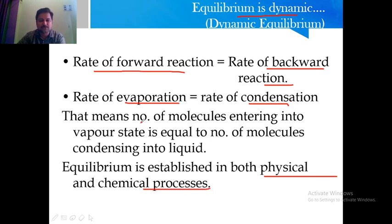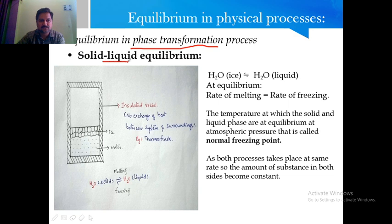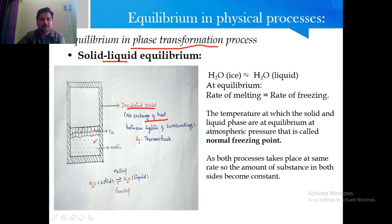First, we discuss equilibrium in physical processes, starting with phase transformations — conversions between solid, liquid, and vapor states. In solid-liquid equilibrium, an insulated vessel (with no heat exchange between system and surroundings) contains small amounts of ice and water. When maintained at a constant temperature, the amounts of ice and water do not change. At 273 K, ice is in equilibrium with liquid water.